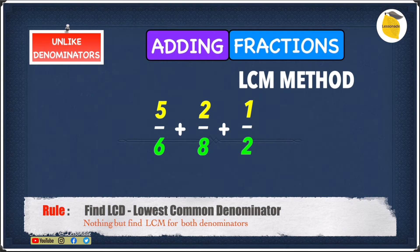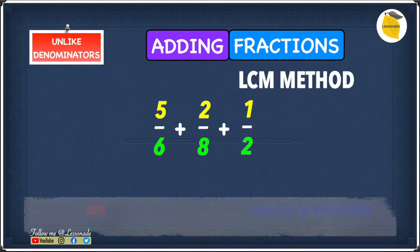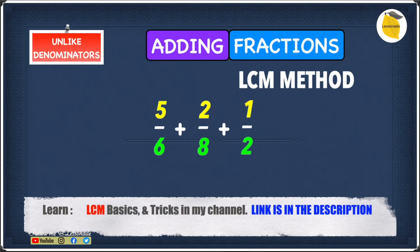First thing we're going to do is to find a lowest common multiple for the denominators. The denominators are 6, 8 and 2. We need to find the lowest common multiple for these three numbers. The lowest common multiple for these three numbers is obviously 24.